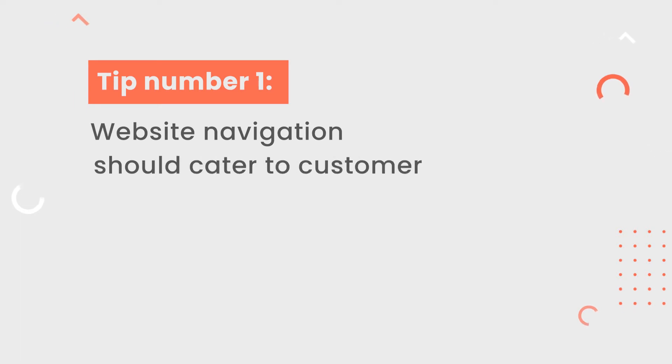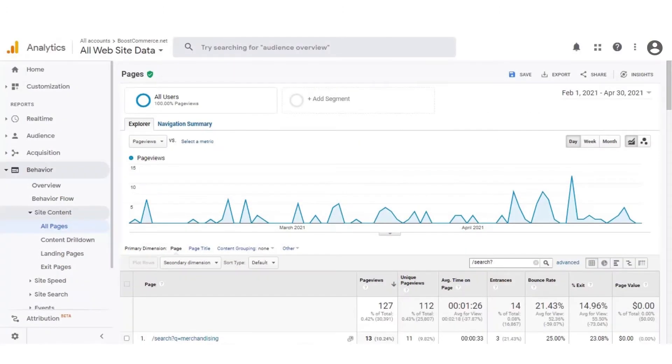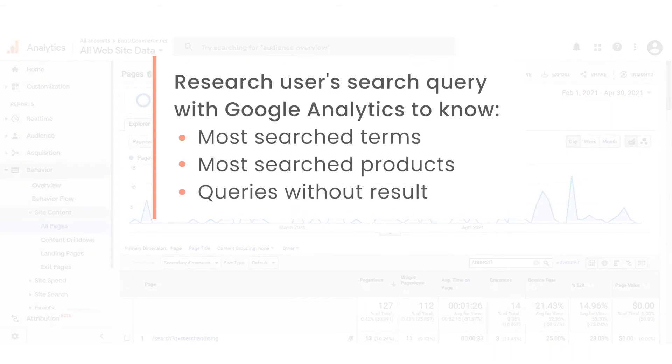Tip number 1: website navigation should cater to the customer. This is the most important one. To persuade people to use our products or services, we first have to know who they are and what their pain points are, so we can come up with a strategic plan to convert more prospects into paying customers. When it comes to optimizing website navigation, it's not much different. For example, if you want to optimize menu navigation, think about what pages or features are most visited, so you can put them in the main menu and limit menu items to the most important ones. Or for internal site search, start researching what search terms your shoppers are likely to put in, what products they are searching for, what queries they put in but you don't have relevant results, and so on.